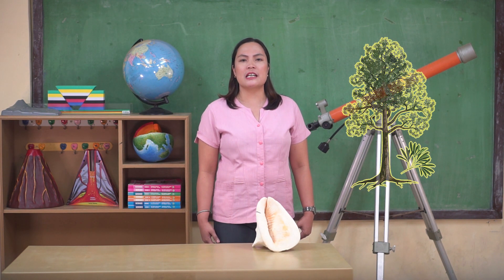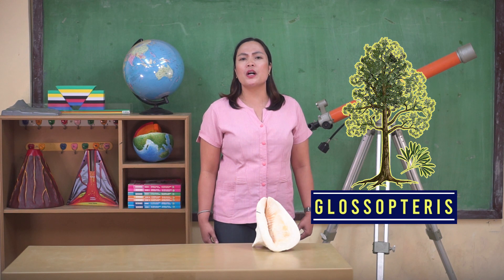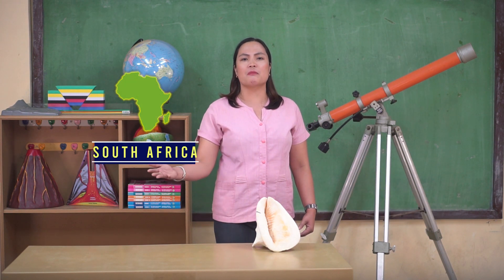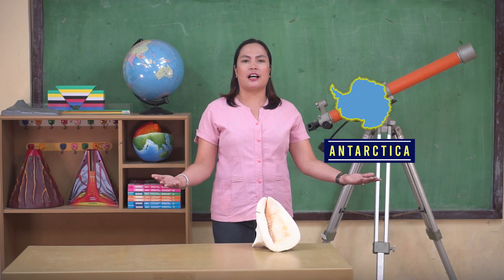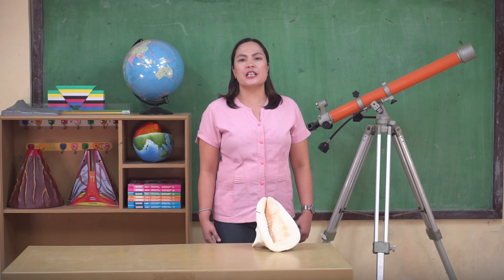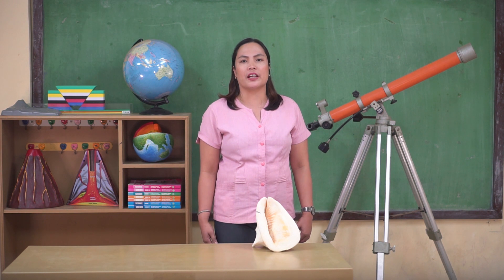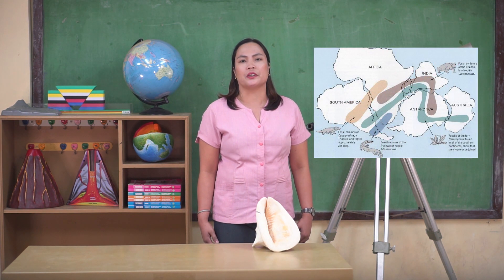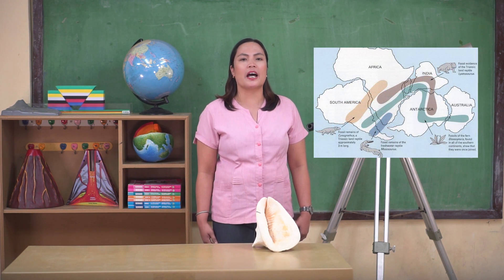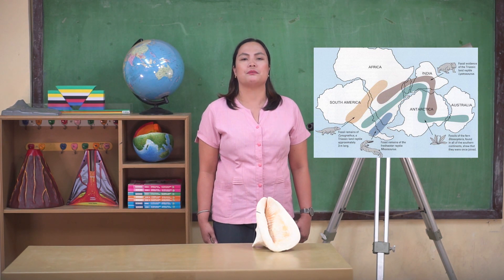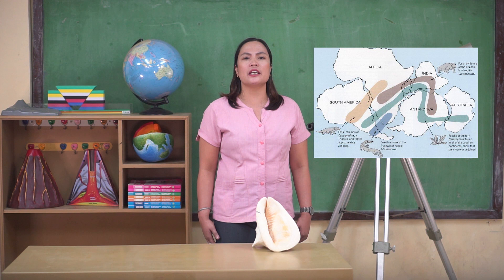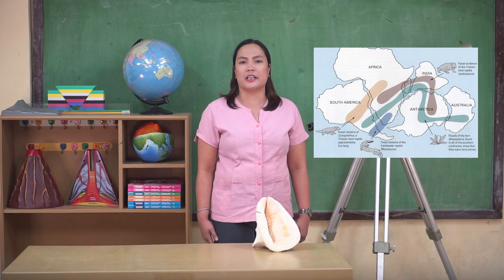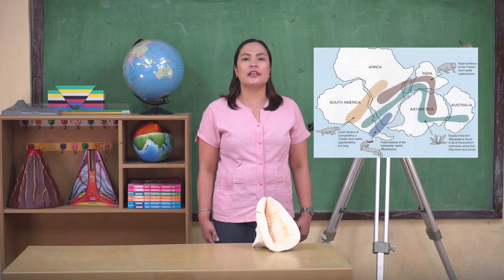Fossils of an extinct plant, Glossopteris, were also located in South Africa, Australia, India, and Antarctica. The large seeds of this plant could not possibly travel a long journey by wind or survive a ride through ocean waves. This evidence would only give one possible explanation: that continents were once connected with each other.